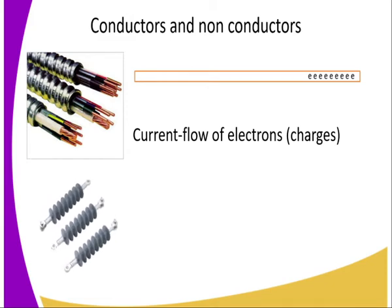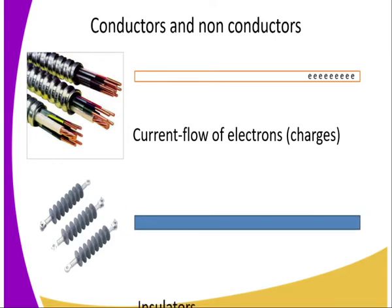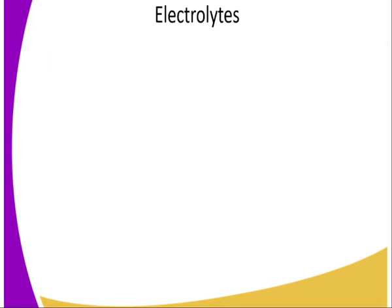We also have non-conductors. These are substances that do not allow electric current to flow through them. They do not have free electrons, so basically they are used as insulators — they do not allow current to pass through them.